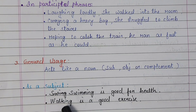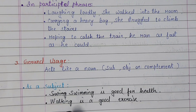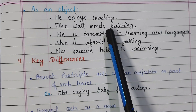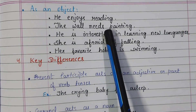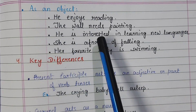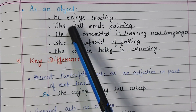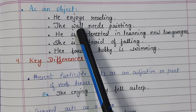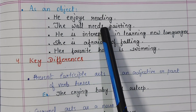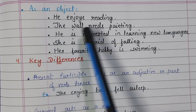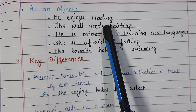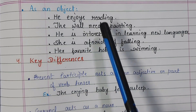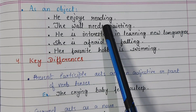The ing form of a verb can also act as an object. 'He enjoys reading.' Enjoys what? Reading. When a verb answers the question 'what or whom,' the answer is the object of the sentence. He enjoys what? Reading. So reading is the object of the verb — it is a gerund. 'The wall needs painting.' Needs what? Painting. So painting is a gerund.